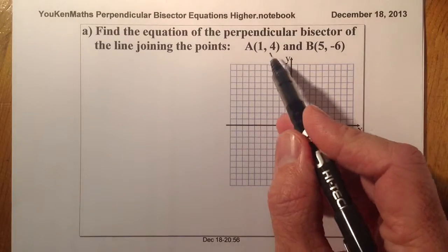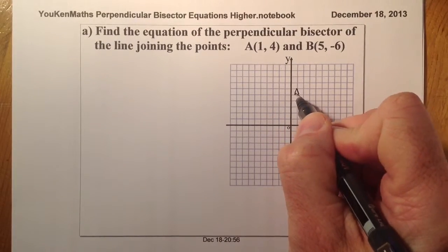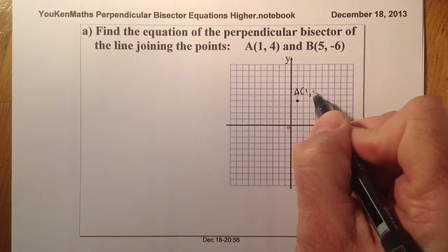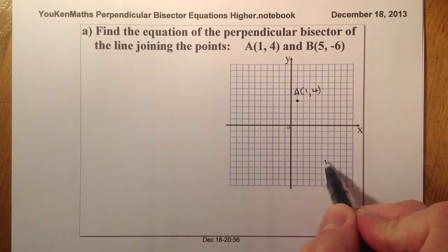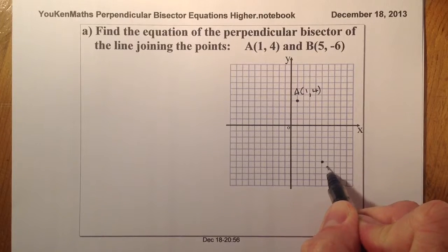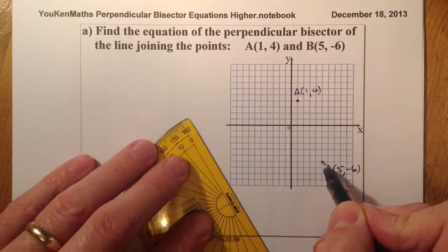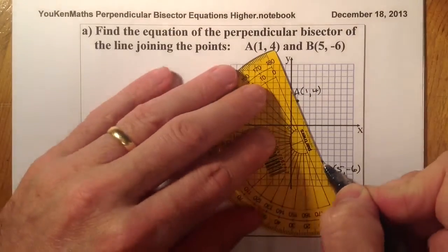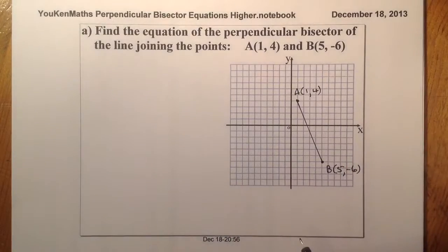So A is the point (1, 4), so there's the point A. And the point B is 5, and that'll be minus 6, so that'll take me down to there. So that's point B at (5, -6). I'll join these together — so that's the straight line that I'm trying to work out the perpendicular bisector of.